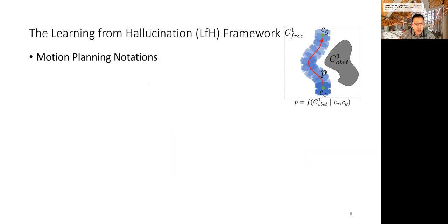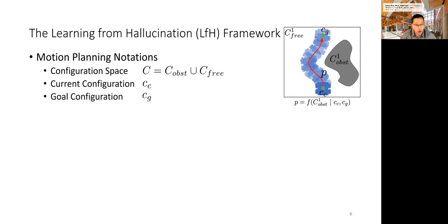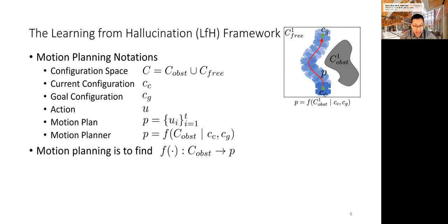First, the learning from hallucination framework adopts some common notations in motion planning. We are dealing with the configuration space C, composed of obstacles C-obstacle and free spaces C-free. The robot locates at the current configuration C-C, and wants to go to the goal configuration C-G. The robot can take action U at each time step, such as linear and angular velocities. A sequence of actions comprises a motion plan P. A motion planner is basically a function F that maps from obstacle configuration to an optimal motion plan, given current and goal configuration. The motion planning problem is to find that function F.